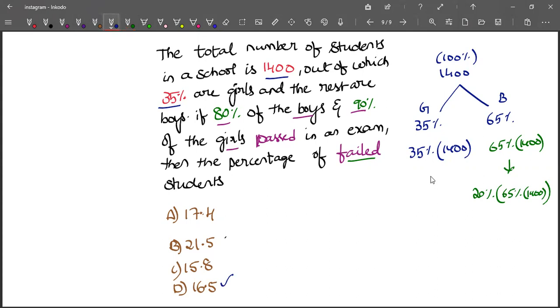For girls who failed in the exam, 10% got failed. So 10% of total girls will give us the number of girls who failed in the exam. So 10% of 35% of 1400.